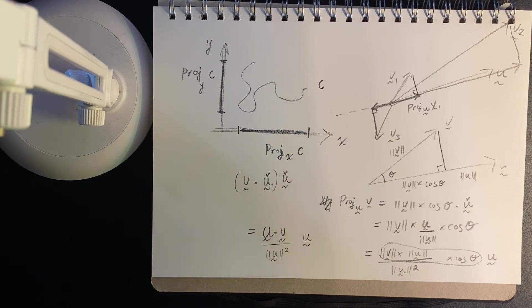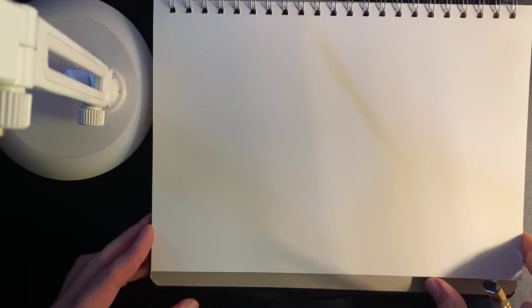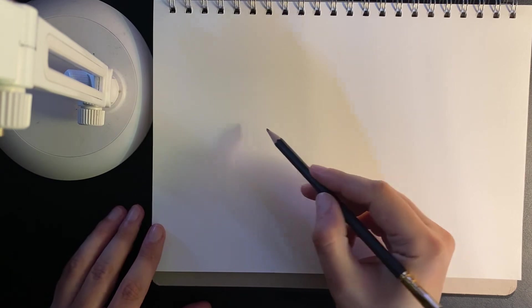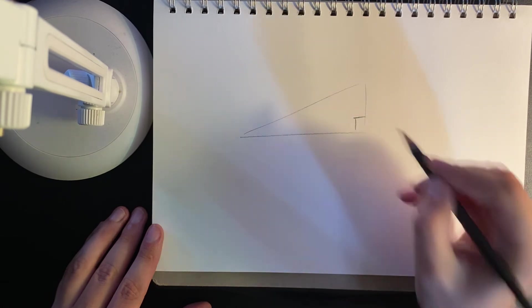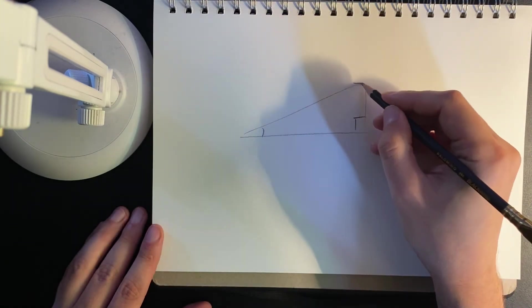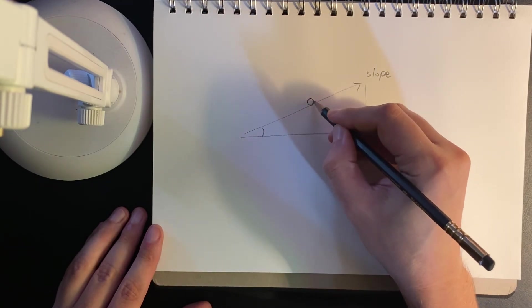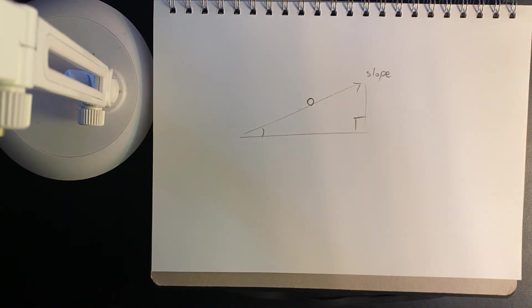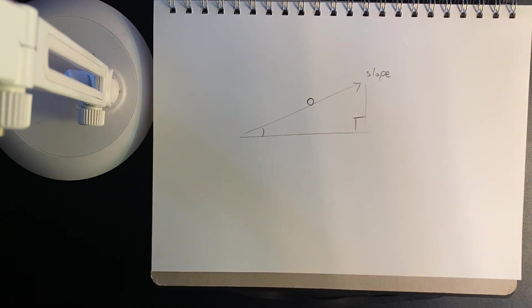But anyway, so that's very cool. Examples of the vector projection. Okay, so I'm just going to go through that first example again. So say we have a slope of some sort. That slope. Yeah, there it is. We have an object, a mass, sitting on the slope. Gravity's pulling it down, but we want to know what is the sliding, what's the resultant force.